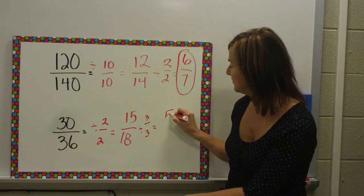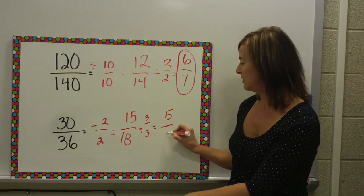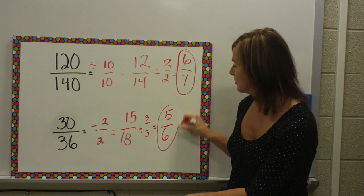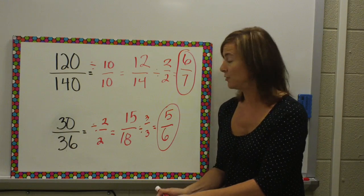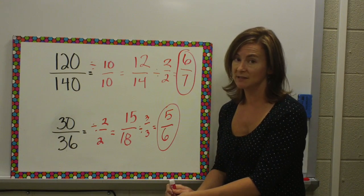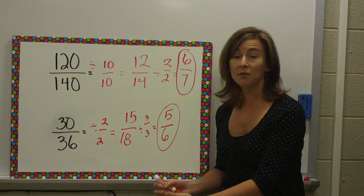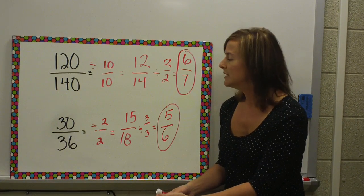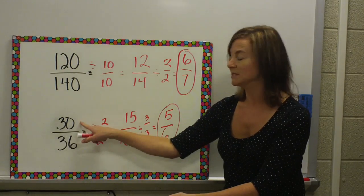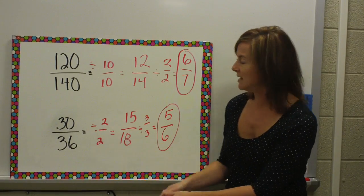15 divided by 3 is 5. 18 divided by 3 is 6. So, my simplest form for 30 over 36 is 5 6ths. Again, if you know your math facts, go for the largest factor you can think of. Like I said at the beginning, I would start with 6, and then I would only have to divide one time.